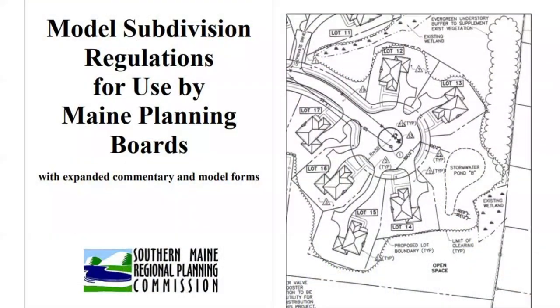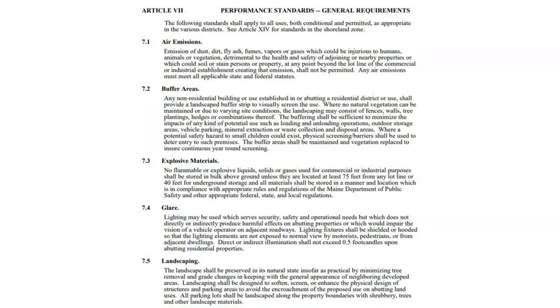It resulted in a lot of land use ordinances. You take that template, which has about 12 different chapters, and it covers different things — it has definitions, it establishes the zones, and it has different nuisance standards. The nuisance standards are things like noise, smell, and visual impacts.